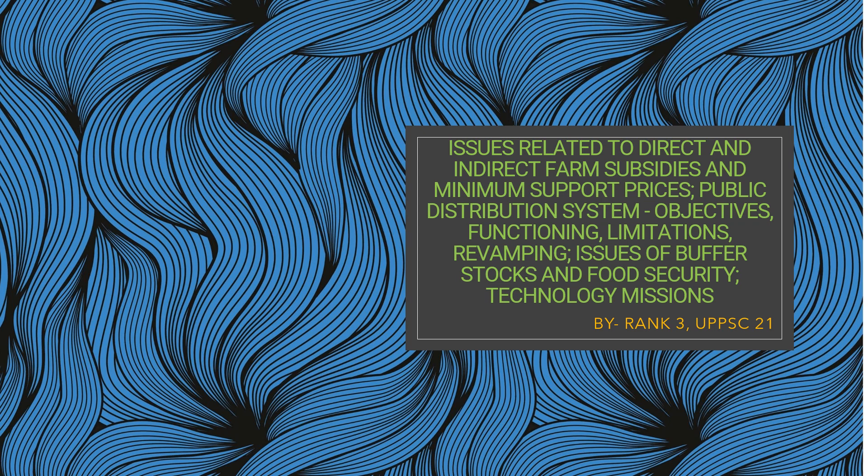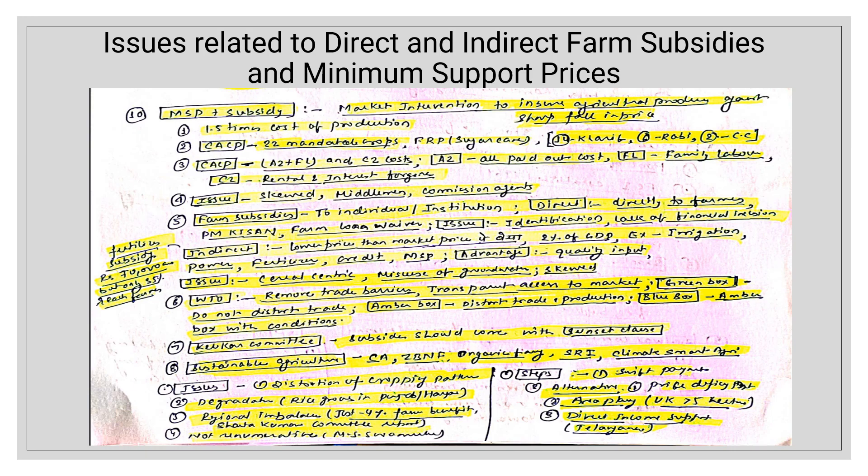Good evening all. Today we will be taking up Topic 5 of GS3: issues related to direct and indirect farm subsidies and minimum support prices, public distribution system objectives, functioning, limitations, revamping, issues of buffer stocks and food security, and technology missions. The first topic is issues related to direct and indirect farm subsidies and MSP.